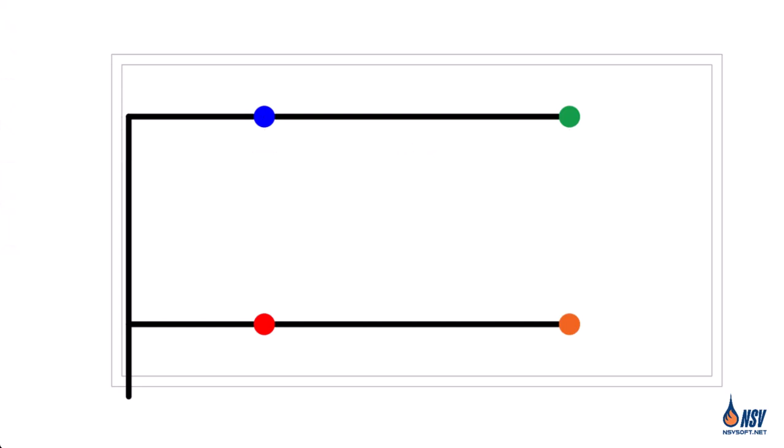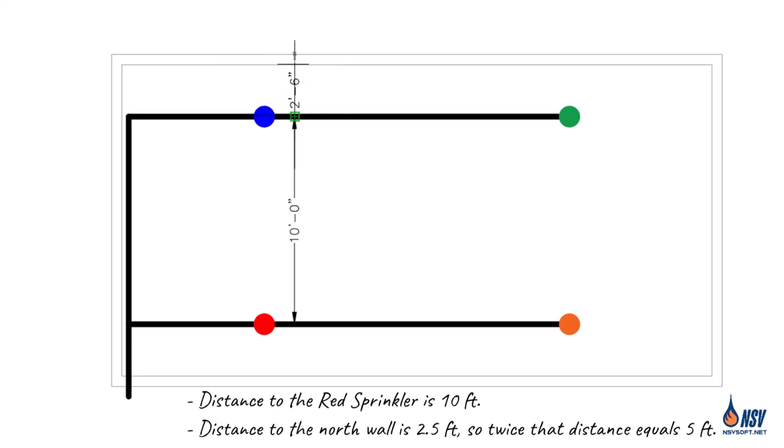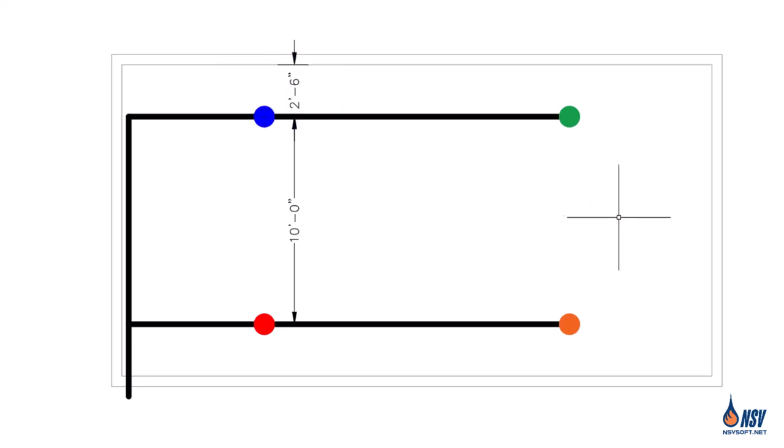Now, let's determine the L for the blue sprinkler. To find L, we examine two possible measurements. The first is the perpendicular distance to the red sprinkler on the adjacent branch line, which is 10 feet. The second is twice the distance to the north wall, which comes out to 5 feet. Since L is defined by the larger of these two values, the correct spacing L for the blue sprinkler is 10 feet.